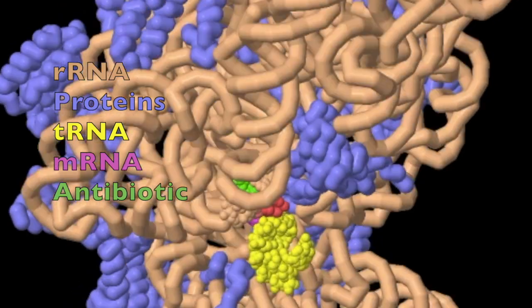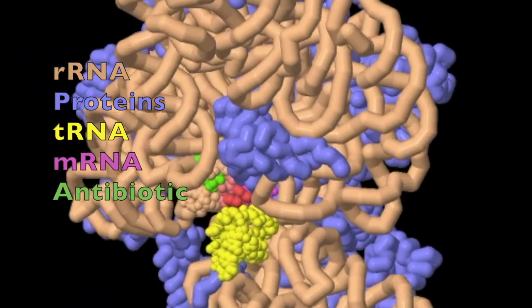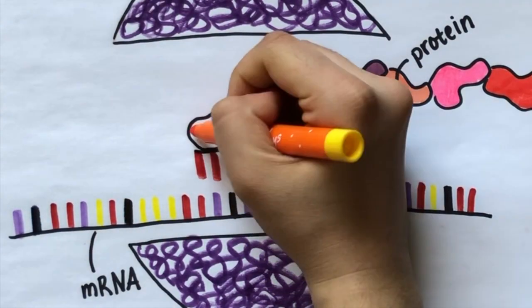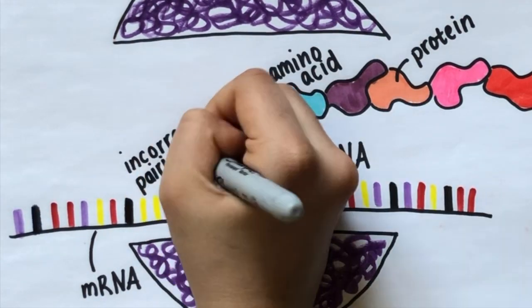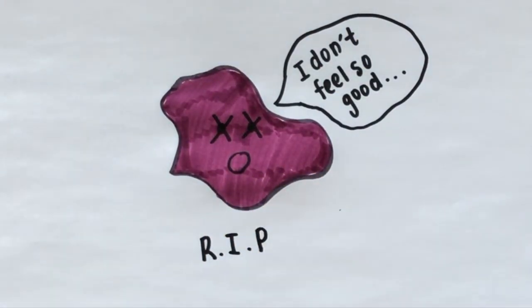The 30S ribosomal subunit is a section of rRNA which ensures that only the strongest codon anti-codon pairs can bond. Antibiotics bind to and alter the 30S structure allowing for weaker incorrect pairs to be formed. The wrong protein is formed and the bacterial cell is either stopped from growing or killed.